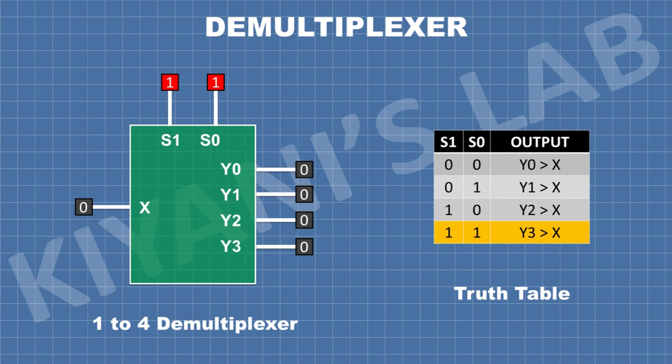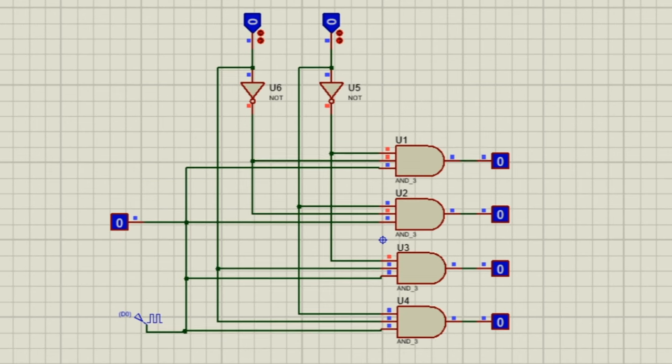Now let's make a logical circuit of demultiplexer to better understand how it works. This is the logical circuit of a one to four demultiplexer. It is made with two NOT gates and four three-input AND gates.